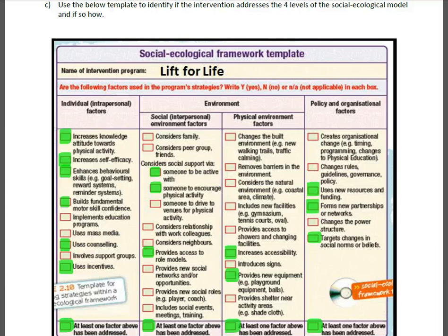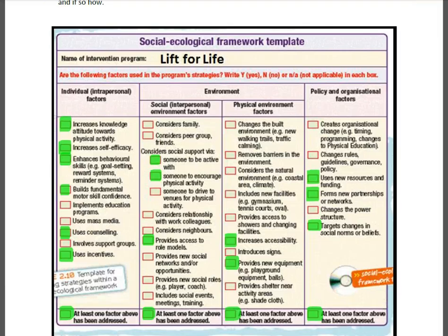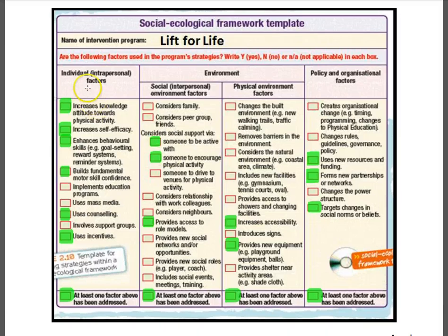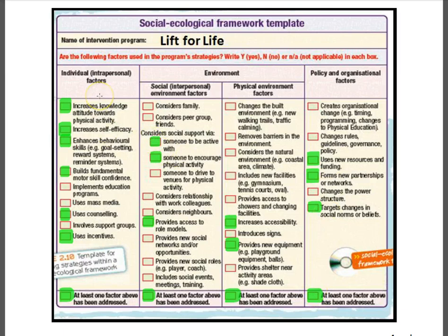Use the BLOW template to identify if the intervention addresses the four levels of the social ecological model and if so, how. This task required the use of the above information — go down from the individual environment, social environment, physical environment, and then policy, and identify whether any of these actually take place. If all bottom boxes have been ticked identifying an individual factor, social, environment, and policy, then yes, the intervention has addressed each one of those levels.